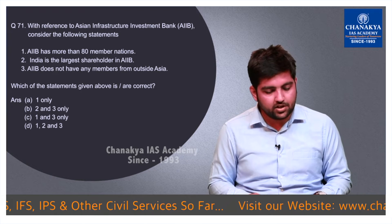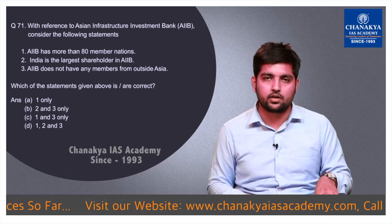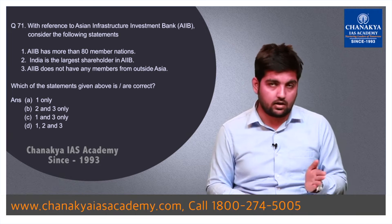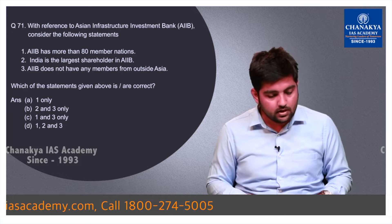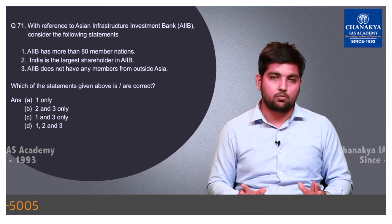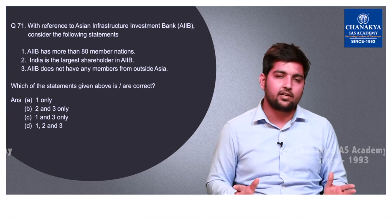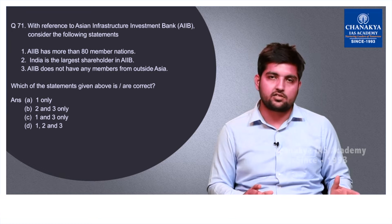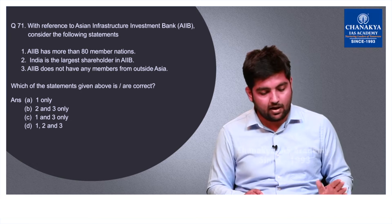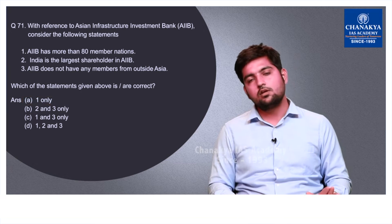Question number 71 is about the Asian Infrastructure Investment Bank (AIIB), which has been in the news many times. Statement 1 — that AIIB has more than 80 member nations — is correct; it actually has more than 100 members. Statement 2 — that India is the largest stakeholder — is wrong; China is the largest stakeholder. Statement 3 — that AIIB has no members outside Asia — is also wrong, as New Zealand and Australia are members. So the correct answer is A — 1 only.